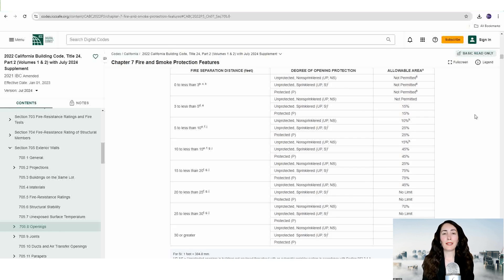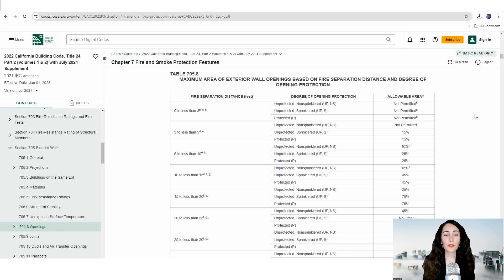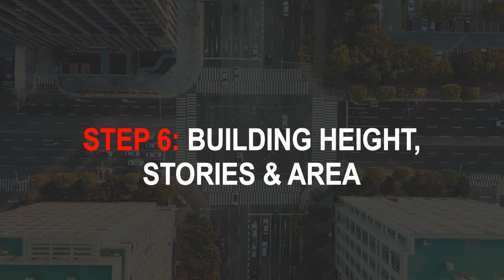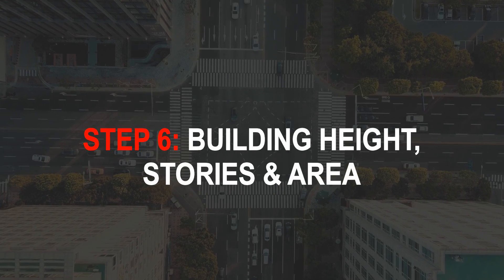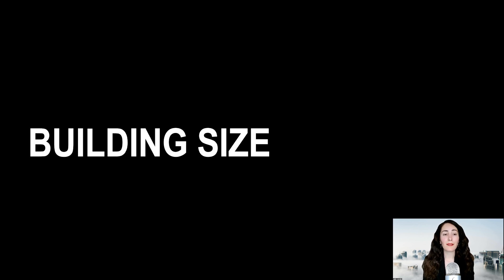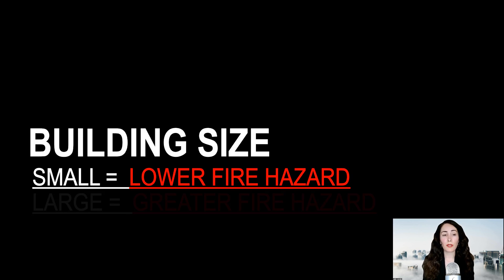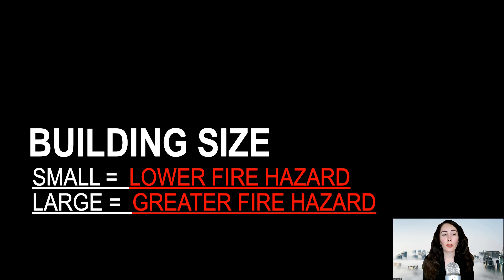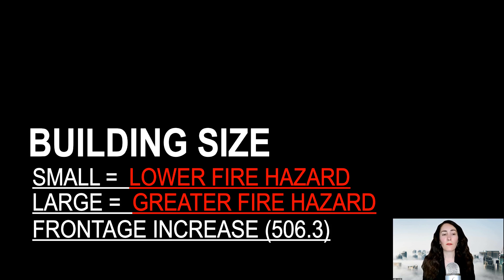You're starting to see just how tricky and how many layers there are to code analysis. There's never a straightforward answer — you have to compare all the parts of the code and put the pieces together to figure out what you can really build. With your building located on the site, the next step is step six, where you determine just how large, how tall, and how many stories your building can be. Smaller buildings present less of a fire hazard from an egress perspective, while larger buildings present a greater fire hazard. Make sure you compute all the floor areas accurately and compare your calculations to the code allowance while ensuring that you're following setback requirements. Some cases will allow for your building area to be increased, which many architects use to balance the needs for a larger building while maintaining enough open space around the building.